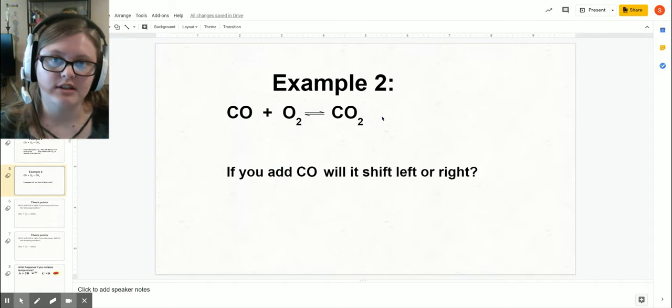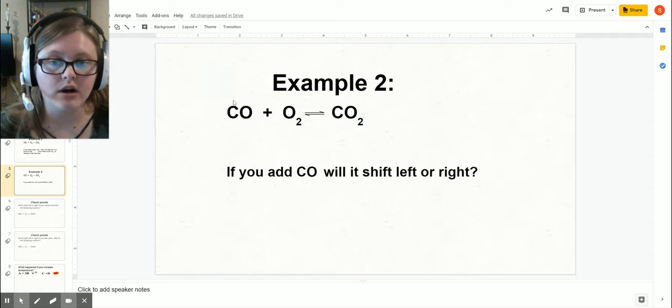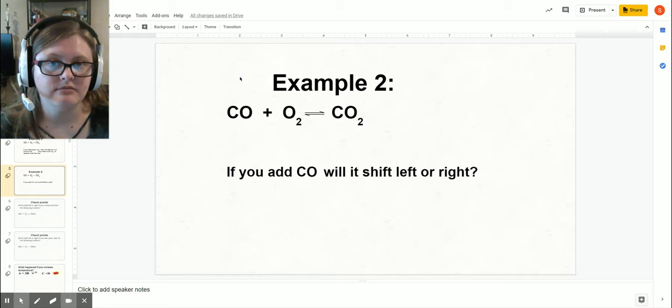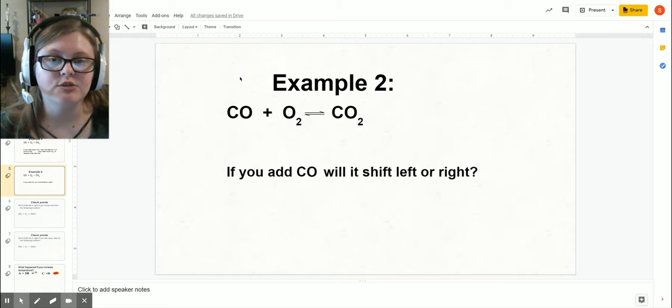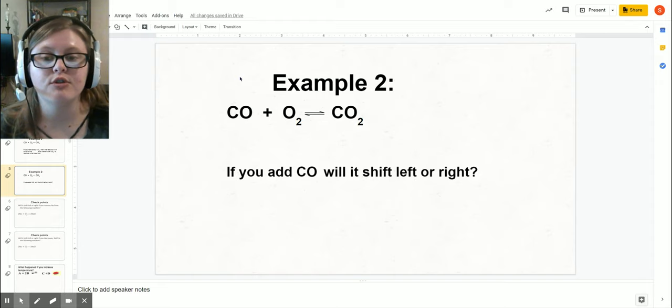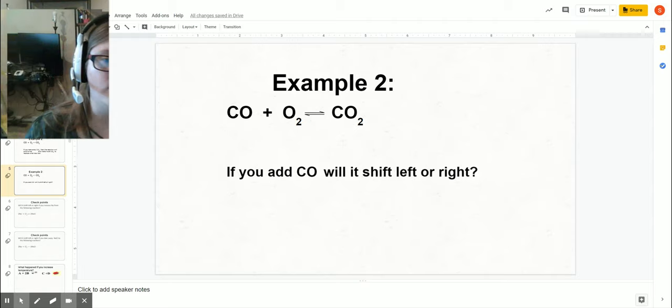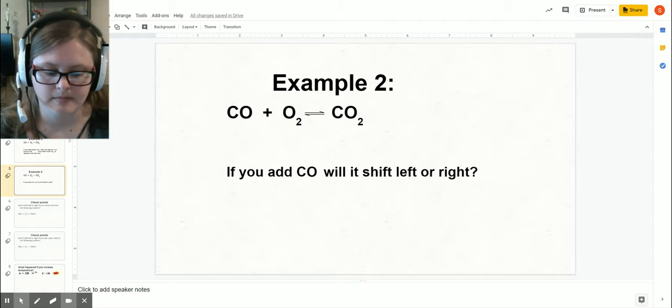If you added more carbon monoxide, what's going to happen? I'll give you a second to think about it. So you added more CO, which means that it wants to get rid of that CO to rebalance the reaction, so it's going to shift to the right to get rid of it, to turn it into carbon dioxide.